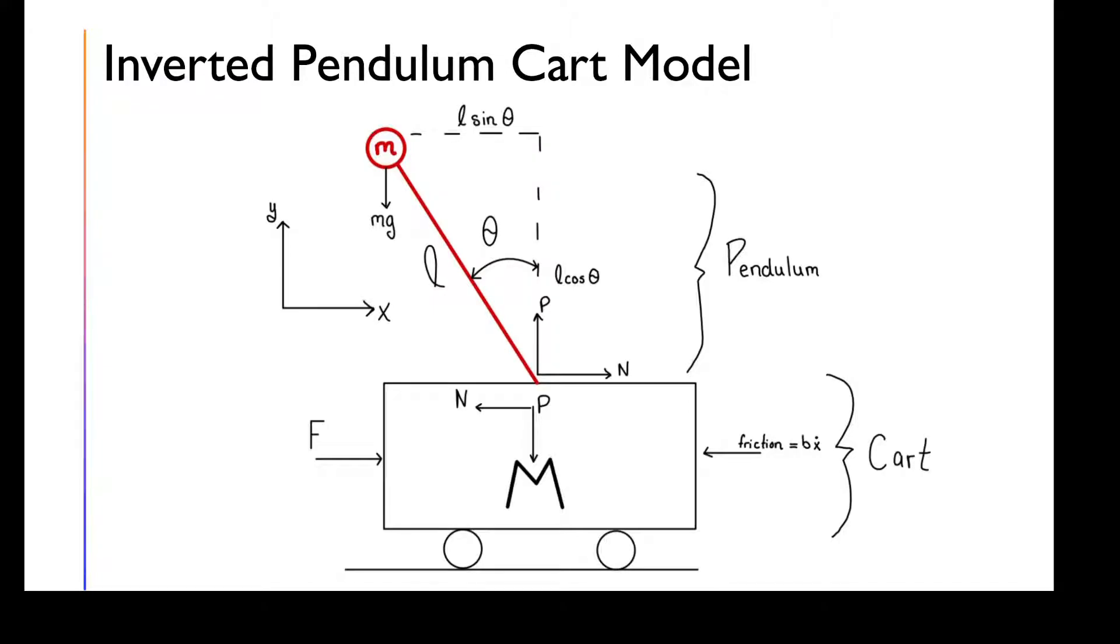Here is our free body diagram. We have two masses. The pendulum has a mass, which is little m, and the cart has its own mass, which is big M.